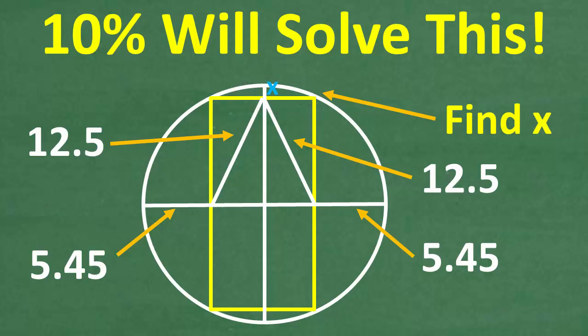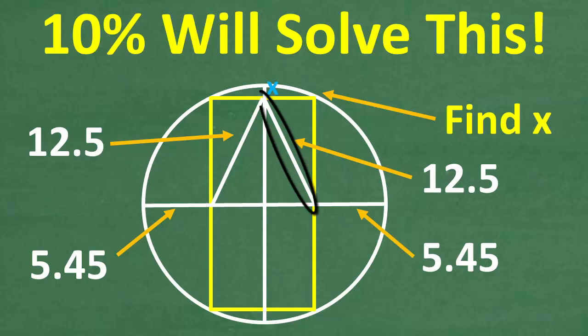We have a complicated-looking figure here. We have a circle, and embedded in that circle is a large rectangle whose corners hit the edge of the circle. The diameters of the circle chop through here — both this way and this way — dividing the large rectangle into four equal smaller rectangles. The diagonal of each small rectangle is 12.5, and the distance from the edge of the circle to the edge of the large rectangle is 5.45 on both sides.